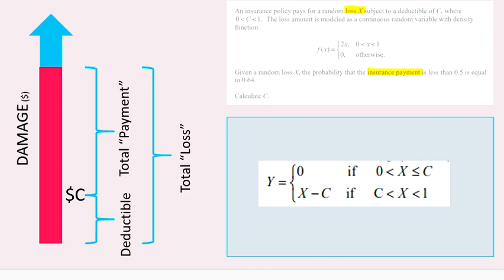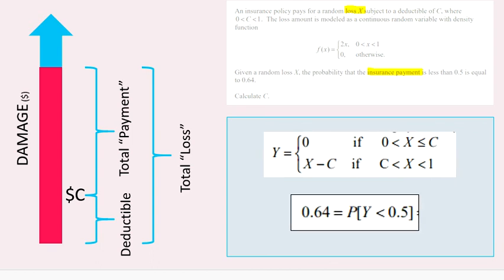The insurance company only has to pay once the loss goes above the deductible. As I showed you, the amount the insurance company pays is equal to the loss X minus the deductible C. The question also gives us that 0.64 equals the probability that Y — the insurance payment — is less than 0.5. Hopefully you can set up that equation from the information in the question. But then you have to change this Y into something that uses C so that you can solve for it.